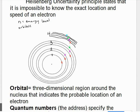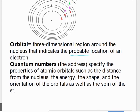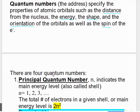The orbital is the three-dimensional region around the nucleus that indicates the probable location of an electron, not the exact location, but where we're most likely to find it. Quantum numbers are the address that specify where the electrons are at. They tell us things like the distance from the nucleus, the energy, the shape of the orbital, the orientation like is it on the X, Y, or Z axis, and lastly the spin. We will get into the four quantum numbers next.